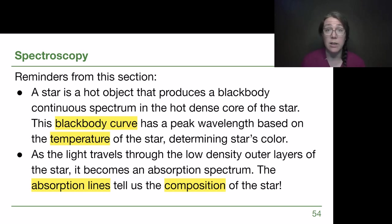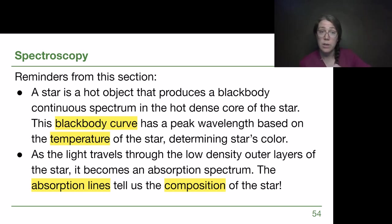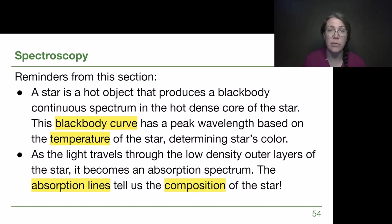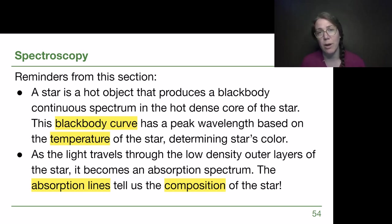A summary for this section: there are two useful ways to look at data we get from starlight. A star will have an overall black body curve, and the peak wavelength tells us the temperature — how hot or cold the star is, and its color. Separately, the composition of the star — what elements are present — comes from looking at the absorption lines in its spectrum, because all stars produce an absorption spectrum by the time that light leaves. In the next video we'll finish Chapter 5, and then after that we'll be talking about telescopes and how astronomers use those tools to gather the light we've been learning about.